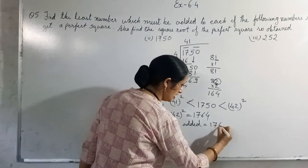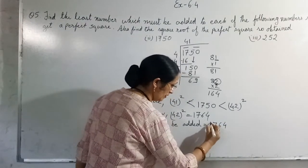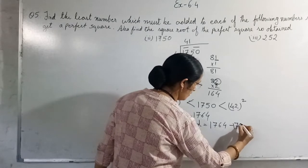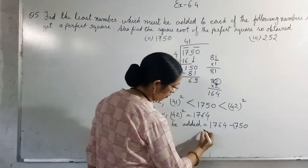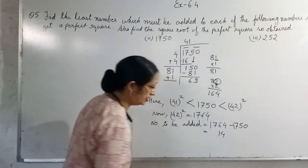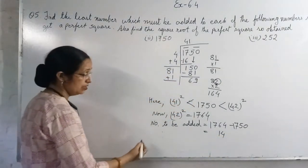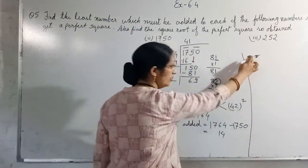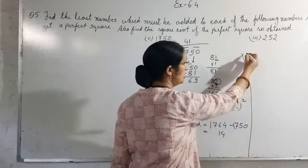So you will write number to be added. When you will subtract 1750 from 1764, you will get 4 and you will get 1. So last line you can write here: thus should be added.